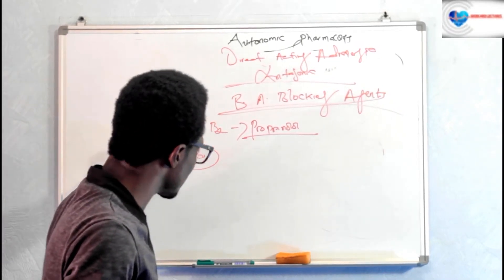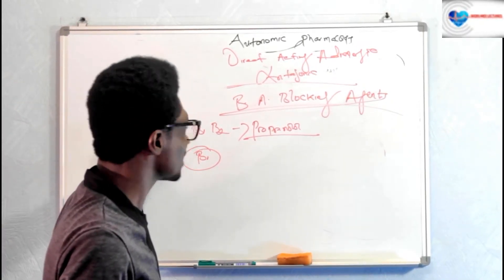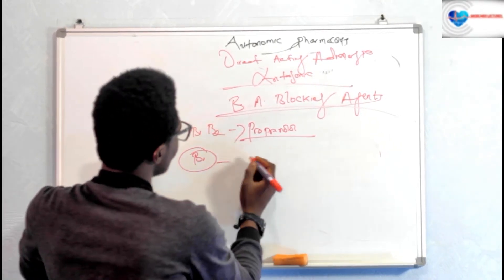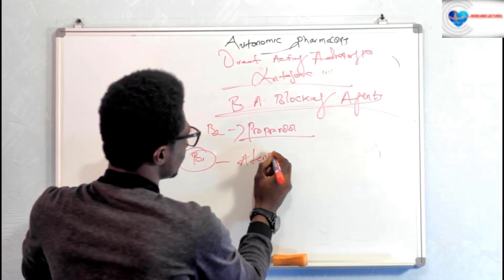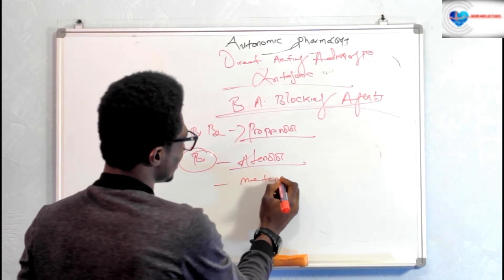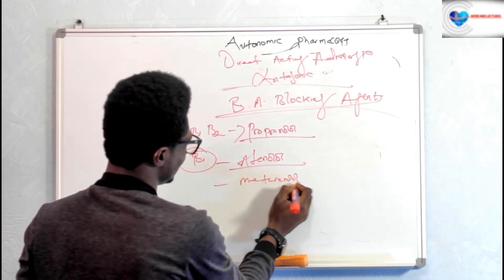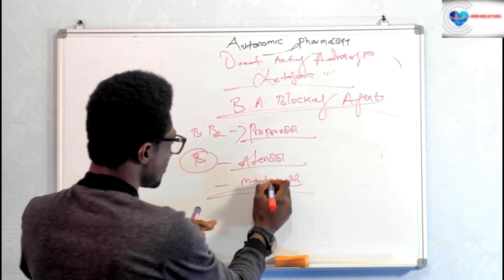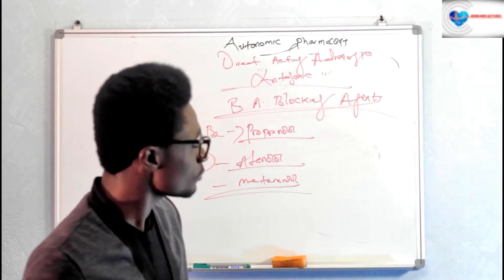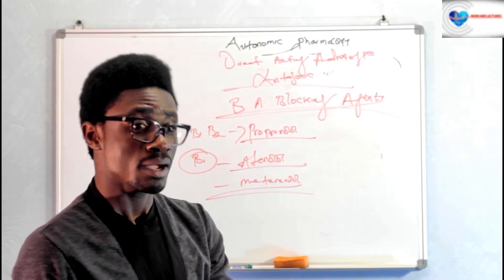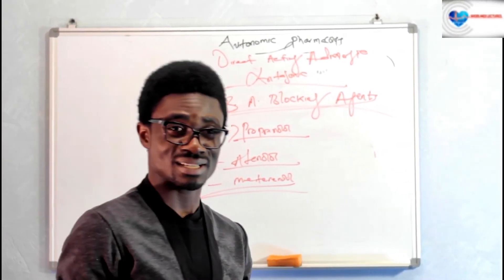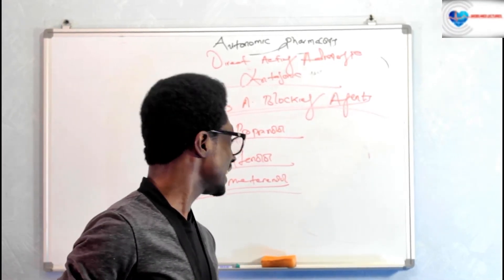Then we have selective beta-1 blocking agents. At least you should know atenolol and metoprolol — these are the two selective beta-1 blocking agents. As for beta-2 blocking agents, they are not used clinically because beta-2 blockade is not clinically important.